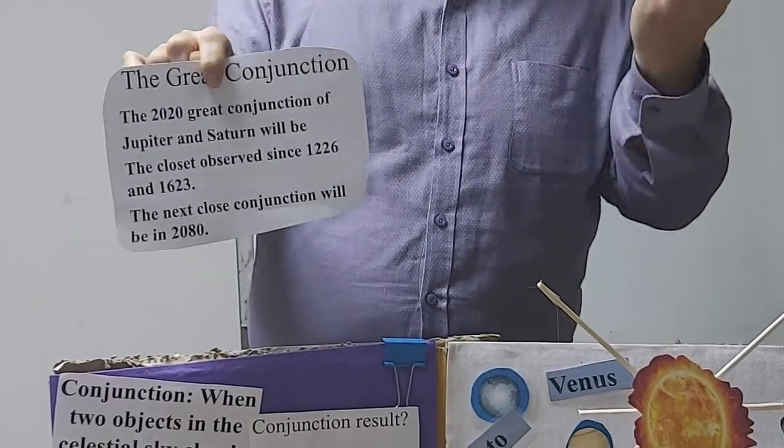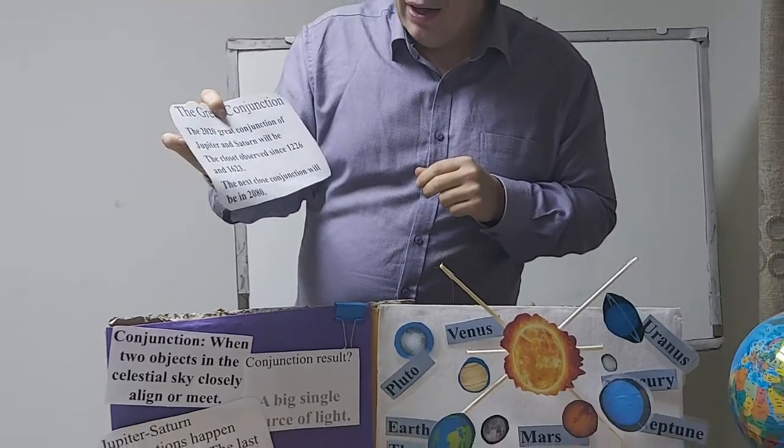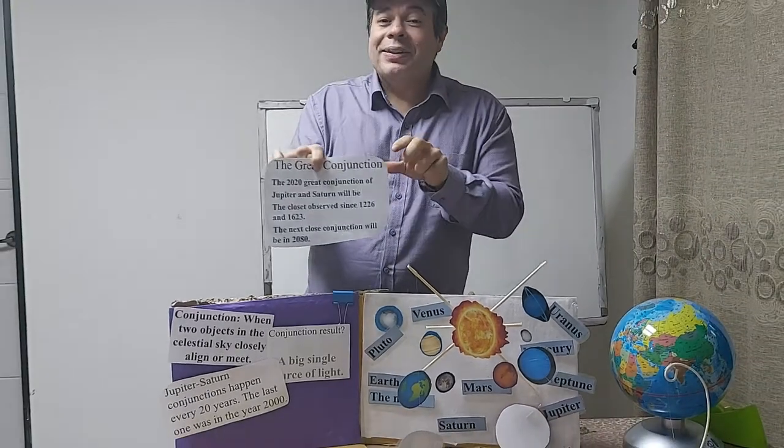These were the last closest observable dates when we saw, when mankind saw these great conjunctions happening. The next one won't be until 2080.